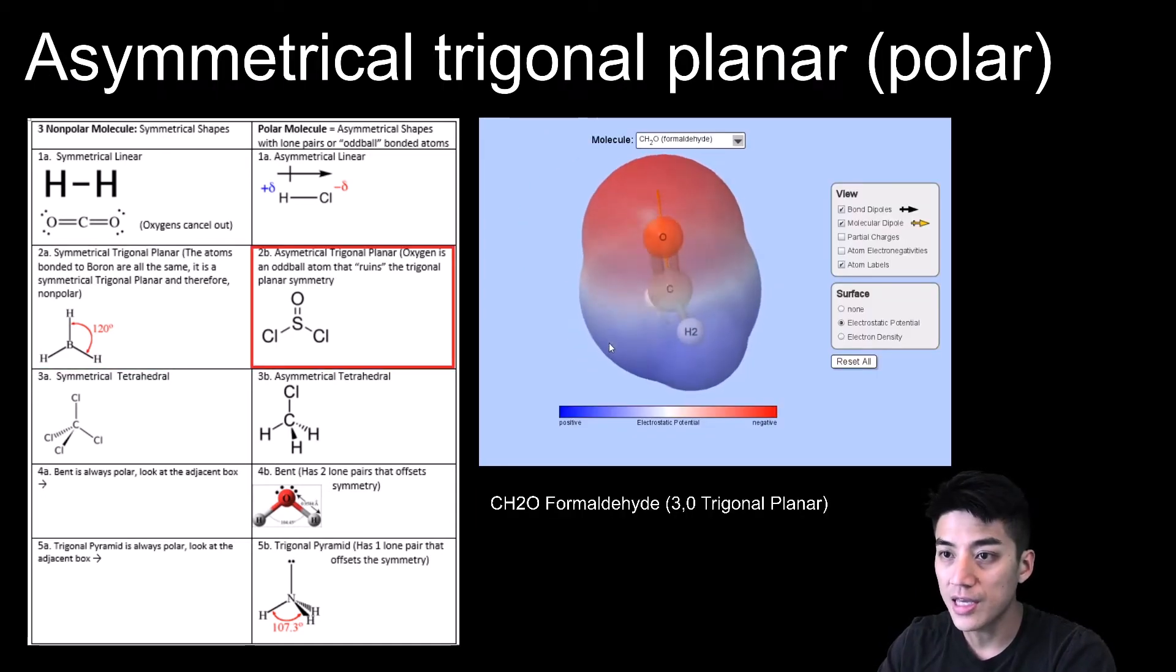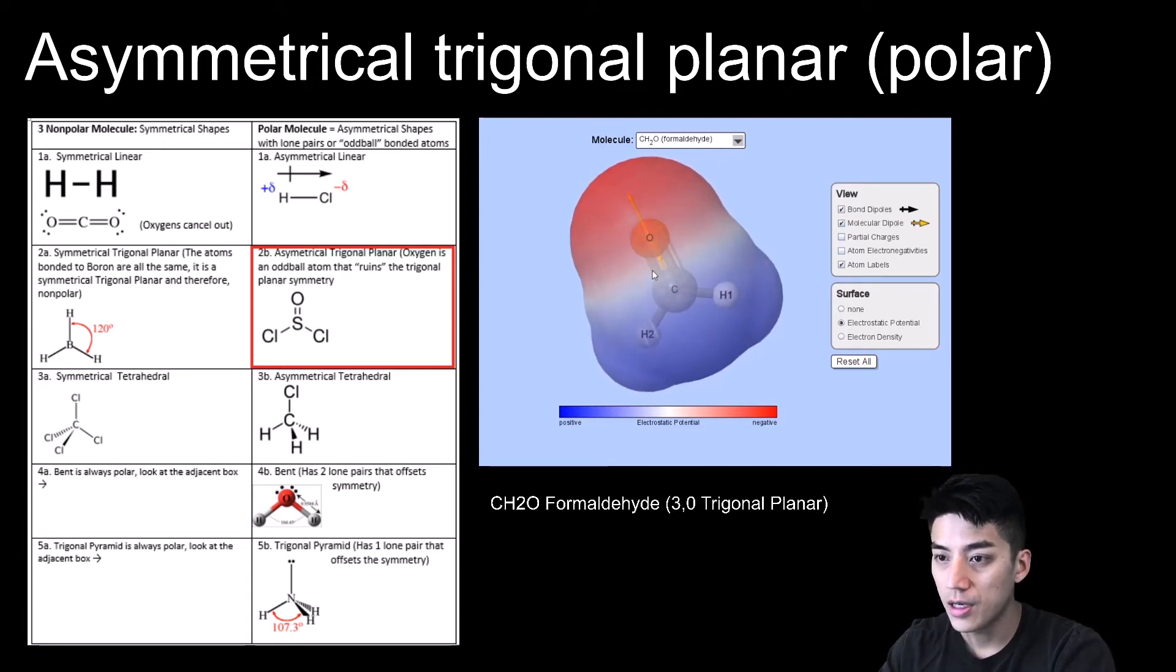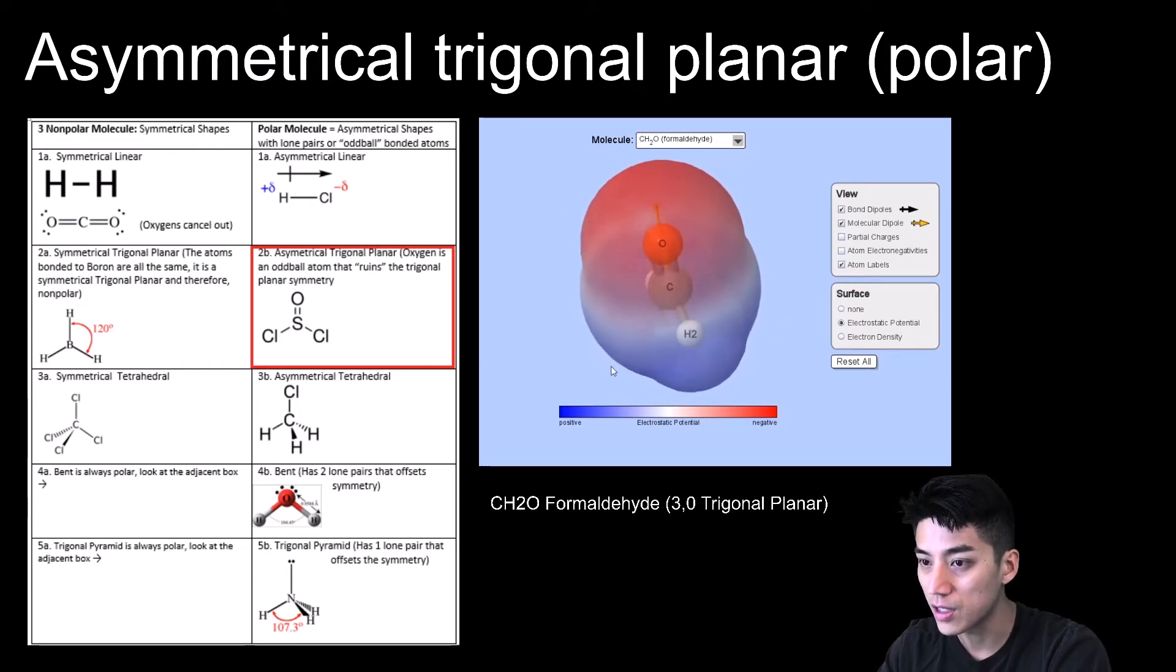Here's a rare example of something that is asymmetrical, but trigonal planar, which means it will be polar overall. So this is CH2O. That's the formula for formaldehyde. And just like how we covered in VSEPR, this thing is a 3-0. It's got three bonded atoms, no lone pairs around the center, which is carbon. So as a result of this, you have this unequal sharing, which results in polarity for this molecule. So the oxygen is the most electronegative thing here. And it's just overpowering carbon and both of the hydrogens. So that region will be negative, which is why it's red. And then right below, you have your blue region, which is electropositive. So because you have these two contrasting regions, this means this molecule overall, even though it's trigonal planar, it's asymmetrical and polar.